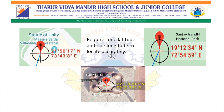Where is Sanjay Gandhi National Park? It is at 19 degrees 12 minutes 34 seconds north latitude and 72 degrees 54 minutes 59 seconds east longitude. Where is the Taj Mahal? It is at 27 degrees 10 minutes 30 seconds north latitude and 78 degrees 2 minutes 32 seconds east longitude. All these three places require one latitude and one longitude to locate accurately.